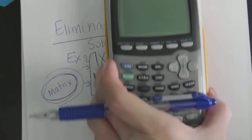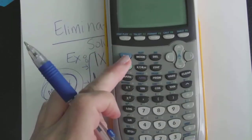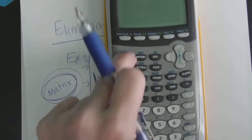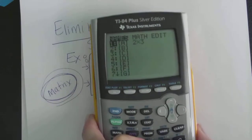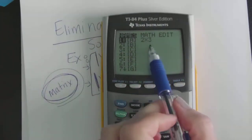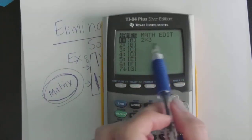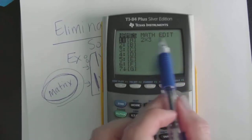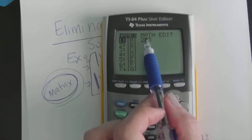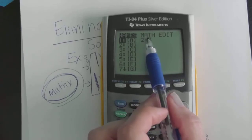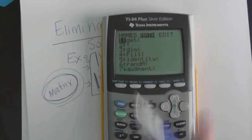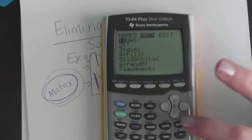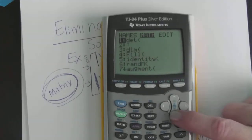Now we want to do some things with that matrix. So now you want to go back in. Second matrix. Notice now it populates the fact that you have a two by three matrix in there. We've already done the editing. Now we want to do some calculations. So we want to go into math. So you're going to arrow to the right to highlight math. And we're going to arrow down.